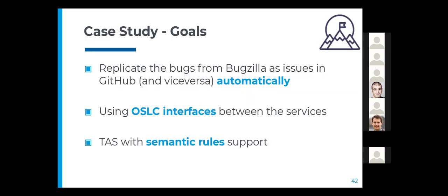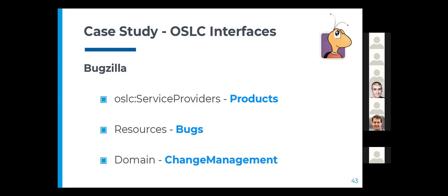Not only that, but we might also want to take automation further. This is just a simple example where we are mirroring one service in another, but we could, for example, have a continuous delivery pipeline with automated tests and automated deployments, and execute that pipeline when a bug or issue is closed. To support these more complex automations, we would need a task automation server with semantic rules for interoperability. So the first thing we need to do is build the OSLC interfaces for our services.